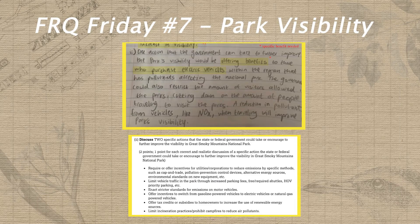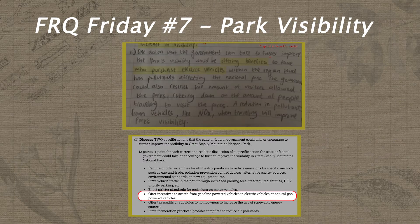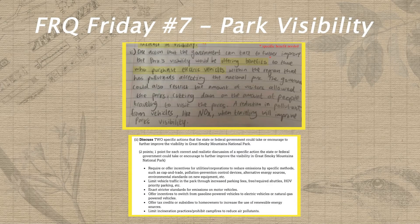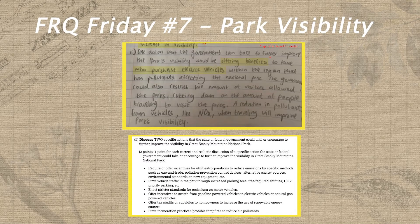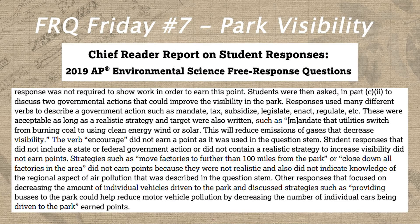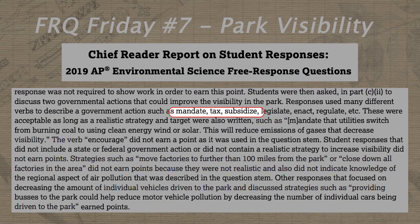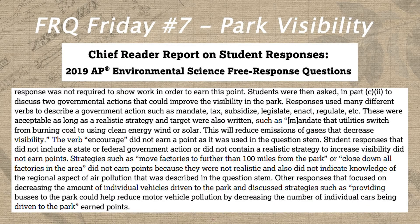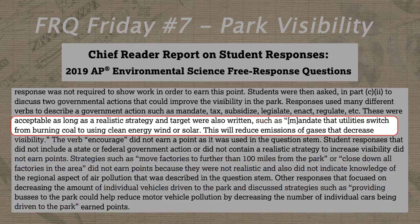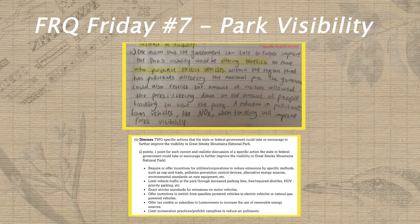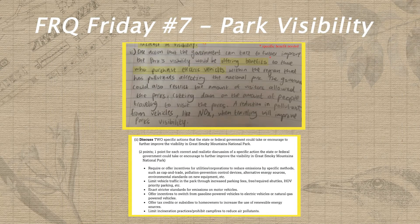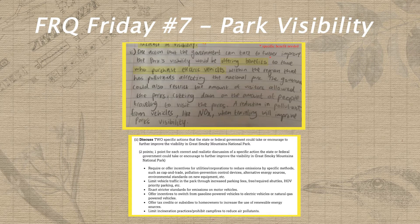In part two of question C, Hannah was really close to earning the electric vehicle point from the rubric, but she just needed to provide a specific benefit that the government could offer to people who purchase electric vehicles, such as a tax credit. From my own experience grading exams for the College Board and reading the scoring commentary for questions like this, students always struggle to identify specific actions that governments can take. Words like mandate, tax, or subsidize are all great examples of specific government actions, as long as there's a clear target for that action, such as mandating that nearby utilities switch from burning coal to using wind or solar energy. Hannah's second response was just a little too unrealistic, since reducing the number of people that visit the park runs counter to the overall goals of the national park system.